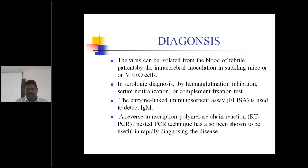The virus can be isolated from the blood of febrile patients by intracerebral inoculation in suckling mice or on cell culture. You can isolate the virus from the blood of the febrile patient and inoculate it into suckling mice; automatically the virus will grow and can be identified.